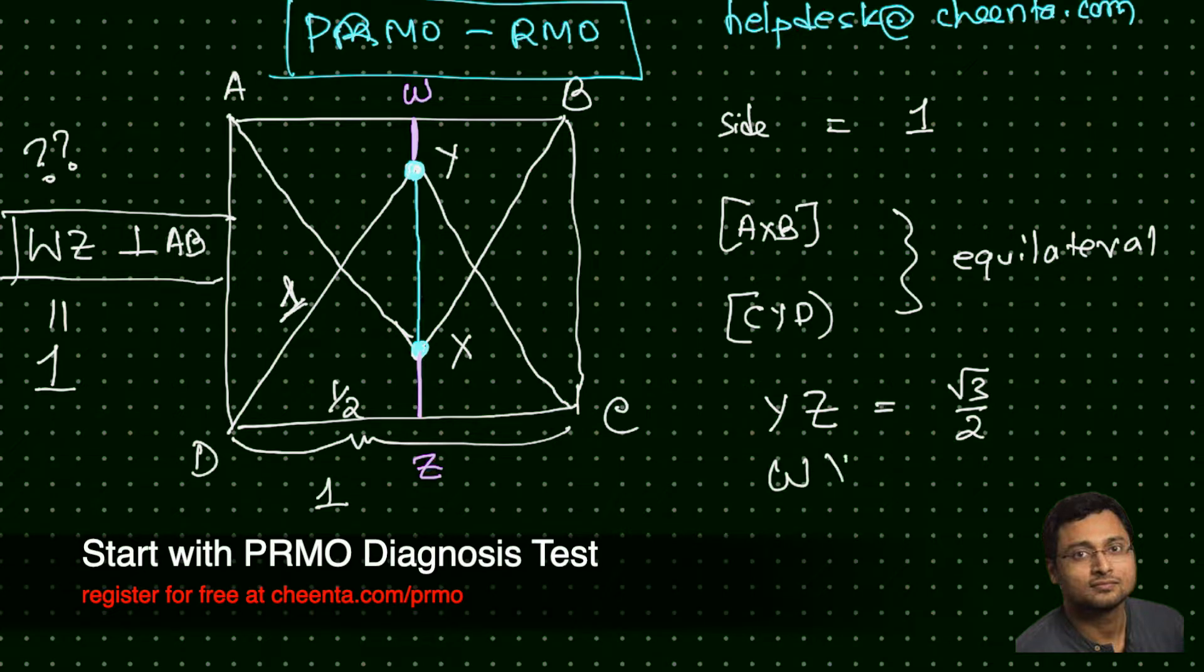Similarly, WX is square root of 3 over 2. So suppose this length is small r, this length is small s, and this length is small t. This little green thing is small t and this little red thing is small s. Then YZ is s plus t and WX is r plus s.